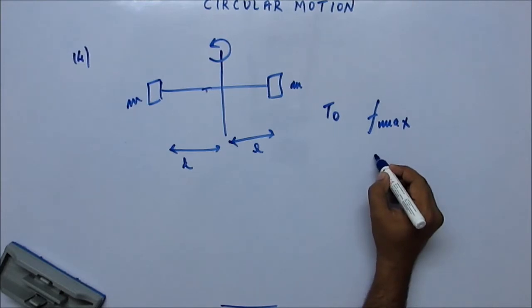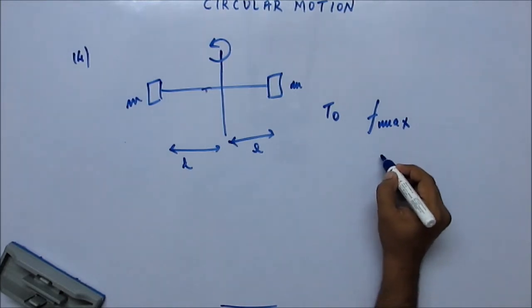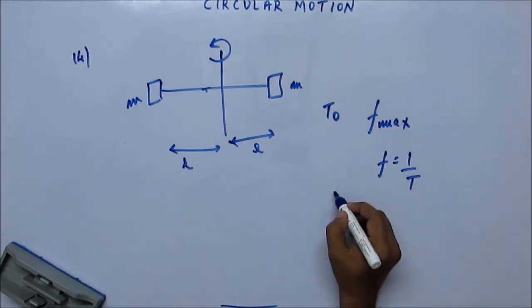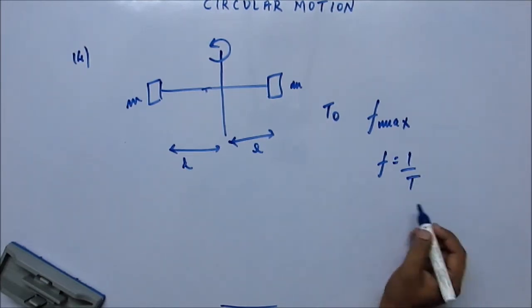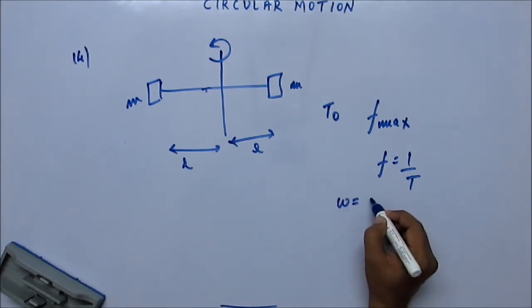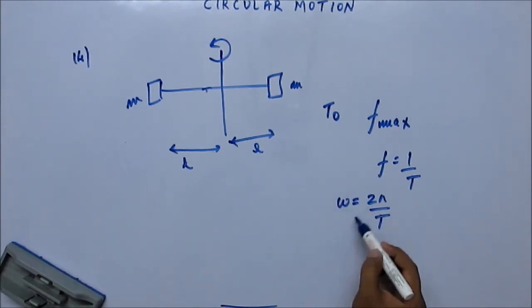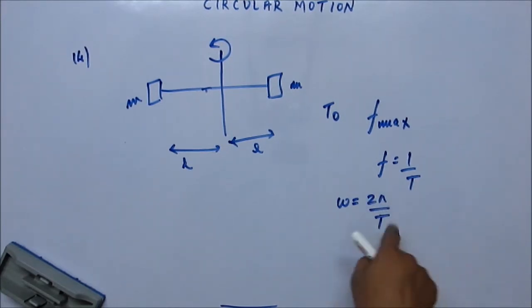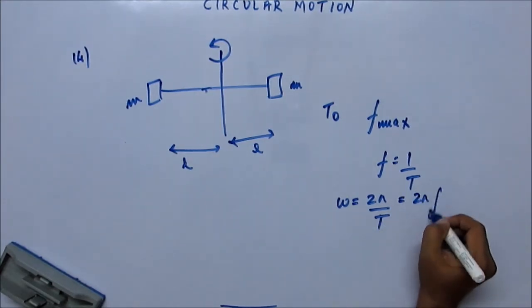Frequency you know—frequency is one upon time, and omega is 2π upon T. Omega is angular velocity: the angular distance 2π it covers in one complete circular motion, and time taken is capital T. Then omega is 2πf because f is 1 by T.